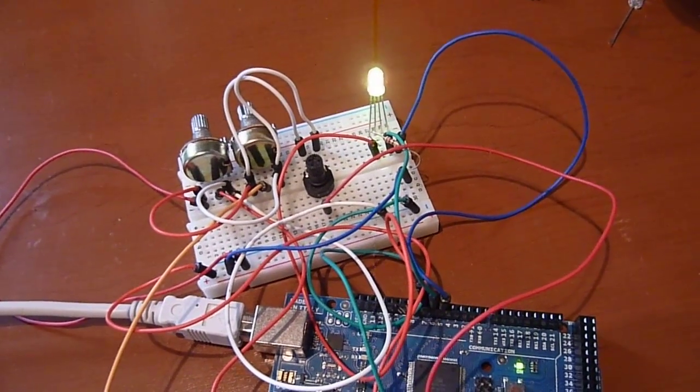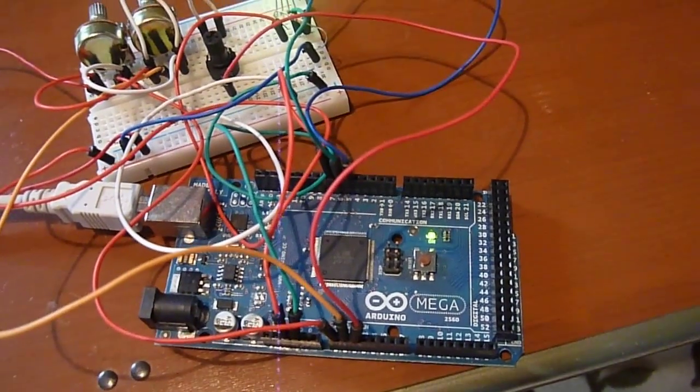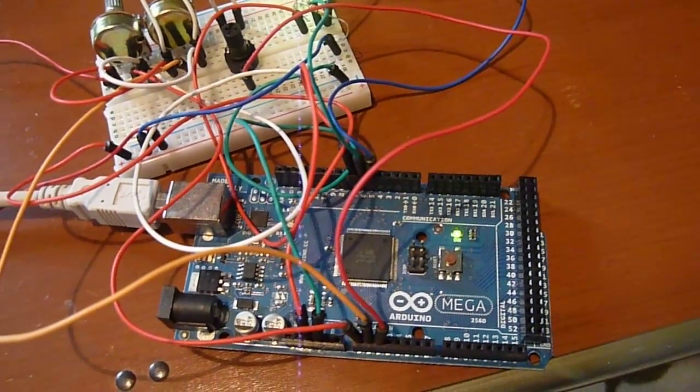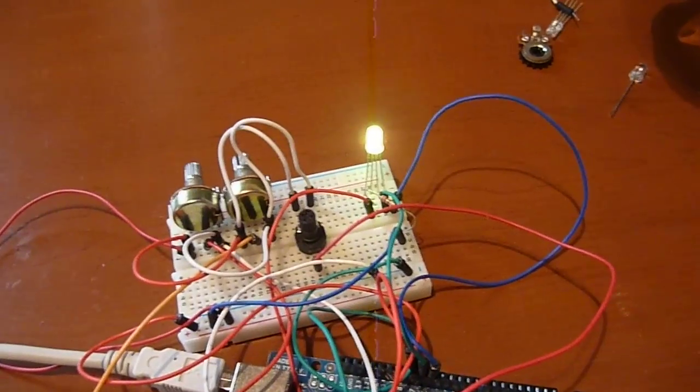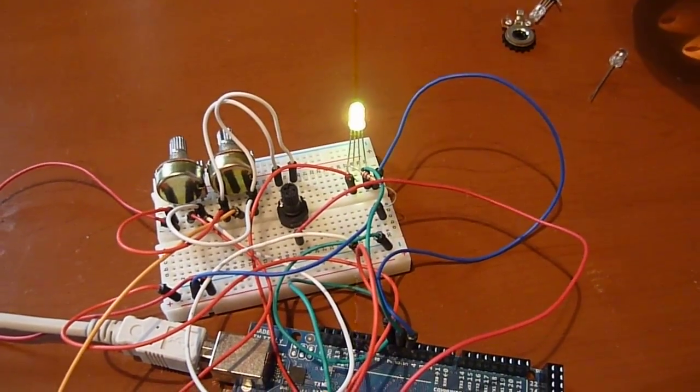Three potentiometers instead of one, and three analog inputs and three pulse width modulated outputs on the Arduino. The code is posted on the website. Hope you enjoy today's project, and a motor control project will be updated.